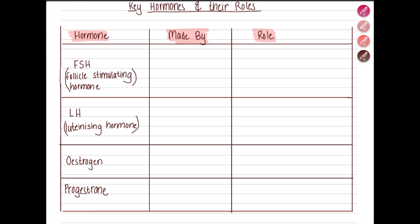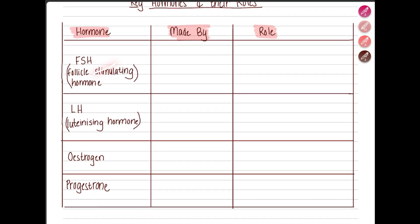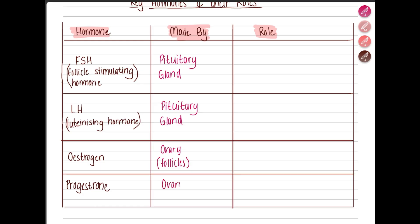The four hormones involved in menstruation are FSH (follicle stimulating hormone), LH (luteinizing hormone), estrogen, and progesterone. FSH and LH are both made in the pituitary gland near the brain. Estrogen and progesterone are made by the ovary. Estrogen is made by the follicles inside the ovary — follicles are structures inside the ovaries which contain the immature egg cells.